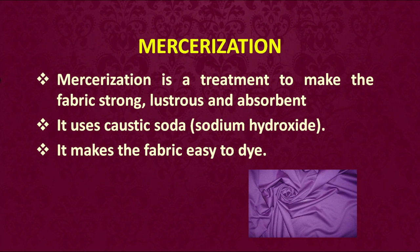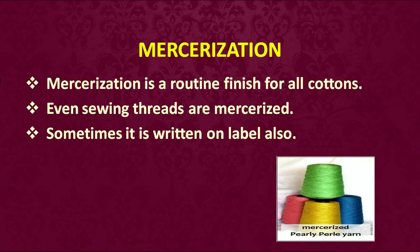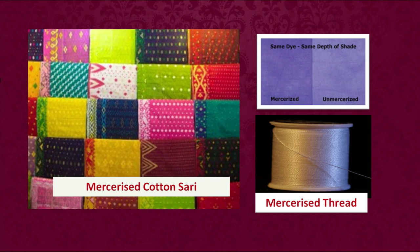The next finish we talk of is mercerization. It is a treatment to make the fabric strong, lustrous and absorbent. It uses caustic soda — also called sodium hydroxide — and it makes the fabric easy to dye. This is a routine finish for all cottons. Even the sewing thread that you use for sewing different clothes is mercerized, and sometimes the mercerized finish is also mentioned on the label of the fabric as well as the threads. Examples of mercerized fabrics include cotton sarees and different threads.